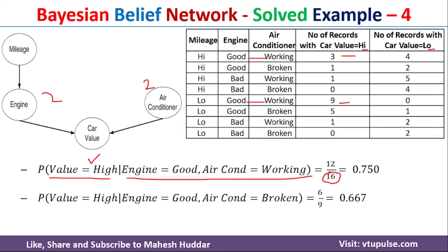For the next condition — engine is good and air conditioner is broken — we consider those examples: 1 plus 2 is 3, plus 5 is 8, plus 1 is 9. Out of 9, how many have value equal to high? That is 5 plus 1, which is 6. So 6 out of 9.